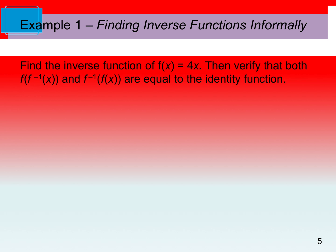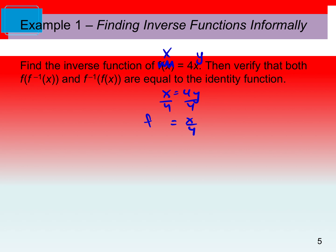In example one, it says find the inverse of f(x) = 4x. I'm going to switch my x and y — f(x) is a fancy way of saying y. I make that x and make my x into y. Then when I solve for y, I'm going to divide by 4. So we get y = x/4. We can't forget to name our inverse — so f inverse equals x/4.